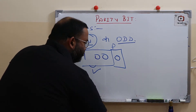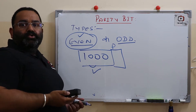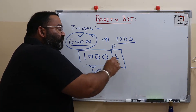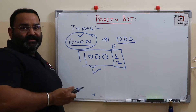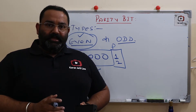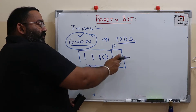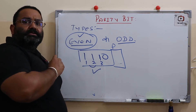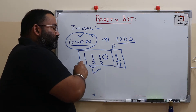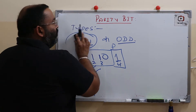Another example: suppose the data is 100. The total number of ones here is one, which is an odd number. So we make our parity bit one, making the total ones: one, two — which is even. For data 1110, count the ones: two, three — that's odd, so the parity bit will be one. Total ones become four, which is even. This is called even parity.